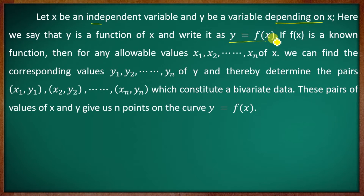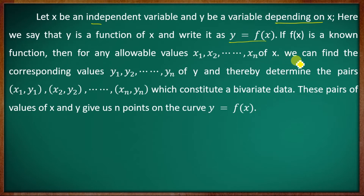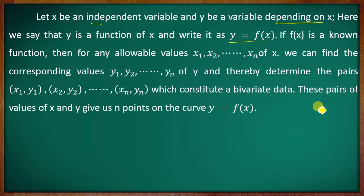If we write y equal to f of x, this is the curve. X is the independent variable, y is the dependent variable, and f of x is known as the function. For variables x1, x2, etc., up to xn, we can find the corresponding values y1, y2, etc., up to yn. Thereby the determined pairs x1 y1, x2 y2, etc., up to xn yn constitute the bivariate. These pairs of values of x and y are the end points of the curve y equal to f of x.